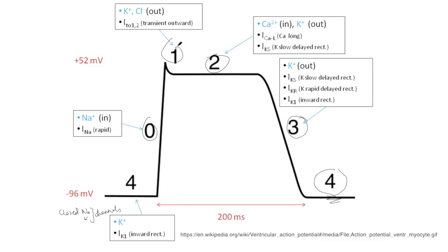Phase 1 occurs once the potential reaches its maximum threshold, and when this happens it causes transient potassium channels to open so potassium can leave the cell and begin to make the membrane potential more negative.